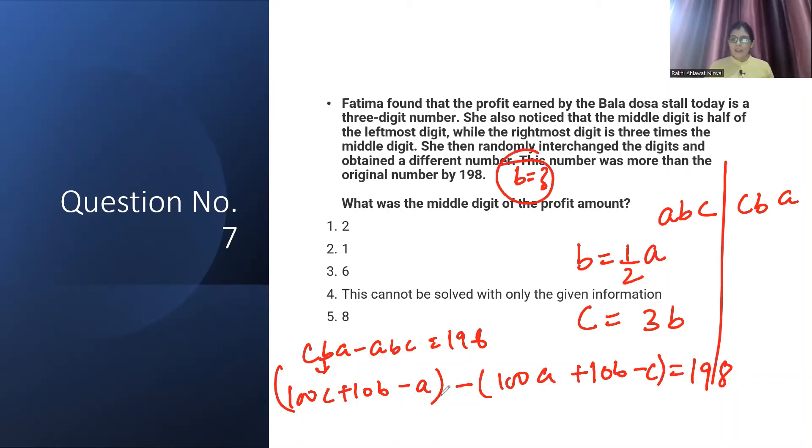Let's see, 100C minus C, so this will be 99C. 10B, 10B cancel. And this will be minus 100A plus A, which is 99A. So 99C minus 99A equals 198. This will become C minus A equals 2. Now write C in terms of B. C is 3B. Write A in terms of B, so 2B equals 2. The value of B is 1. You just had to find B. So answer is 1.